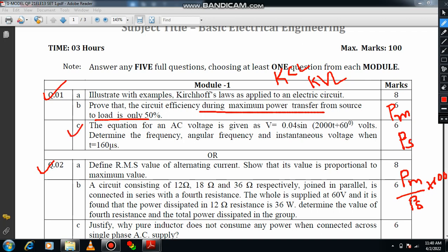Moving to the third sub question: The equation for AC voltage is given as V equals 0.04 sin 2000T plus 60 degrees volts. Determine the frequency, angular frequency and instantaneous voltage when time T equals 160 microseconds. Very simple question. First, write the standard equation: V equals Vm sin omega T plus phi.